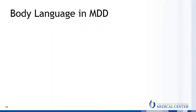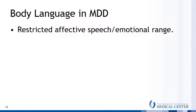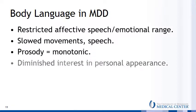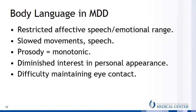In a psychiatric evaluation, it's important to watch for body language characteristic of patients with major depression. These include restricted speech and emotional range, as well as slowed movements or speech. Prosody is often monotonic, and patients may display a diminished interest in their personal appearance or have difficulty maintaining eye contact. Any one of these, and especially if you note two or more, should put a depressive disorder on your diagnostic radar.